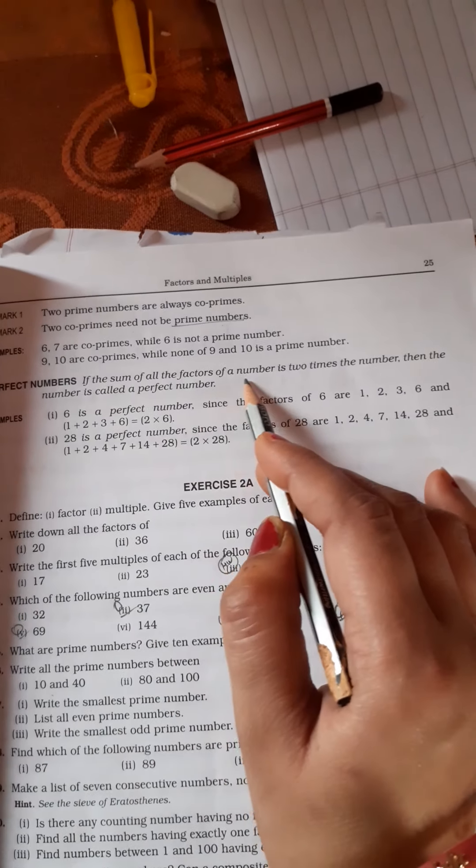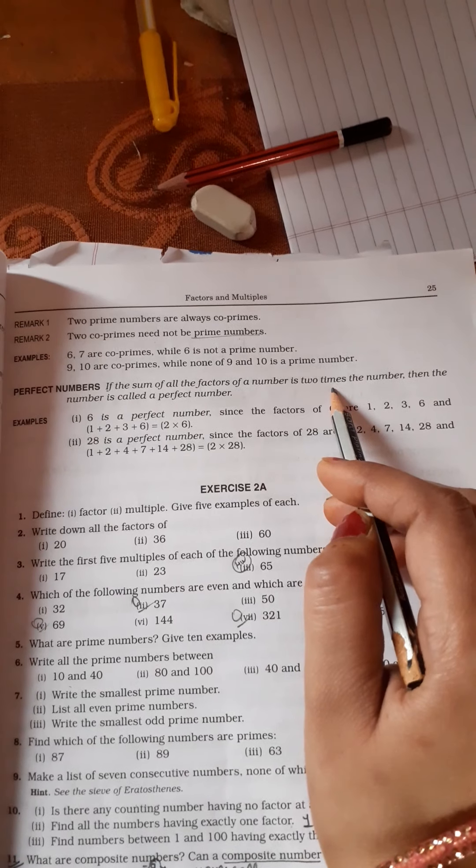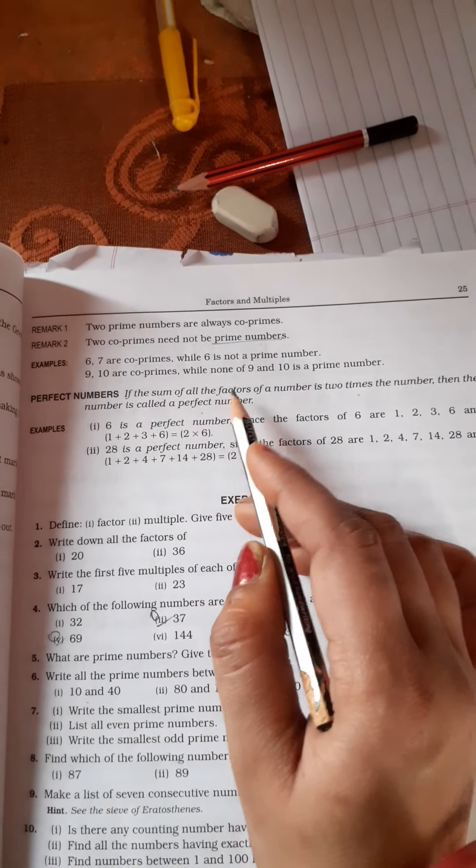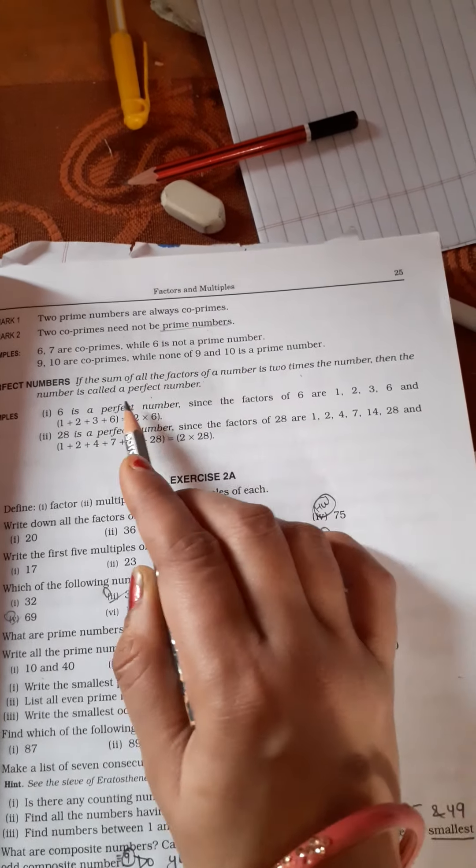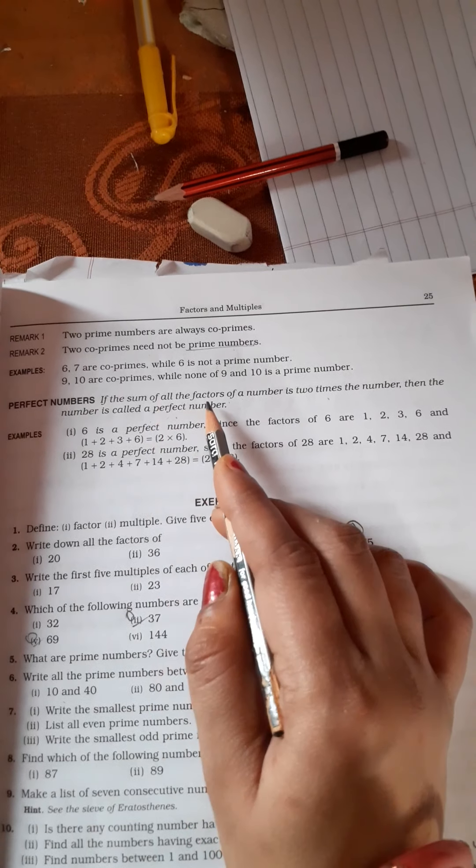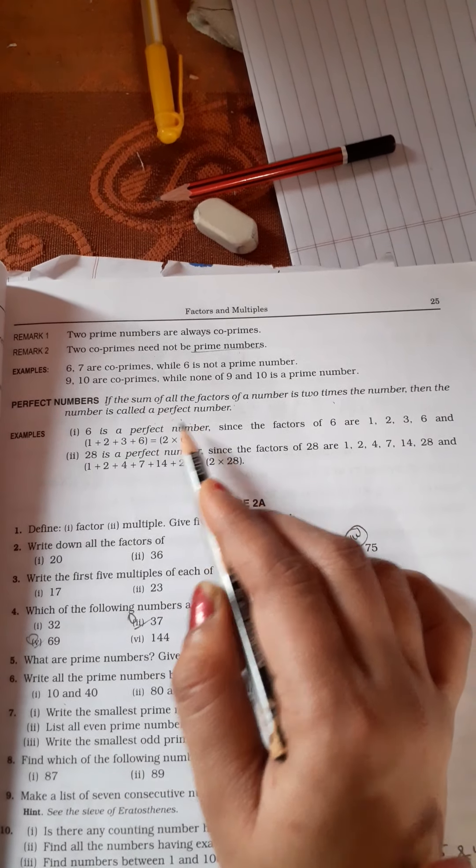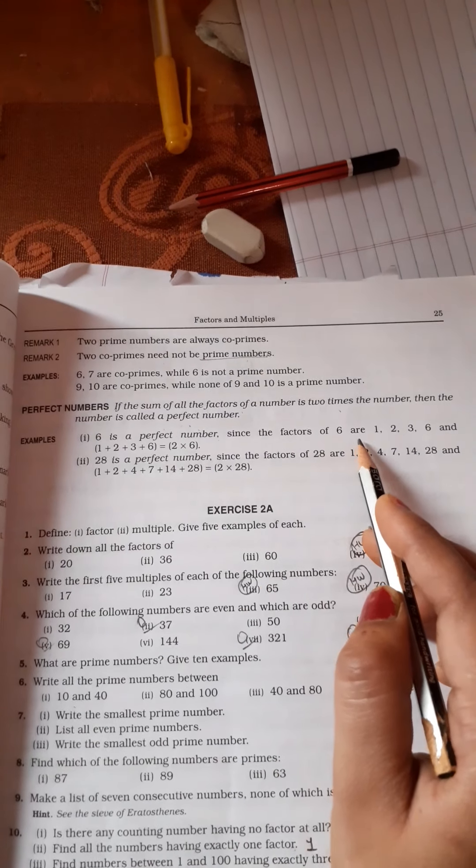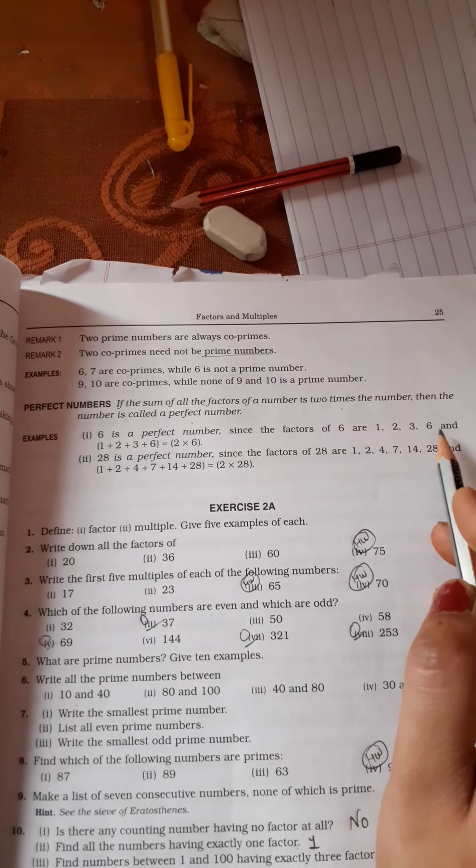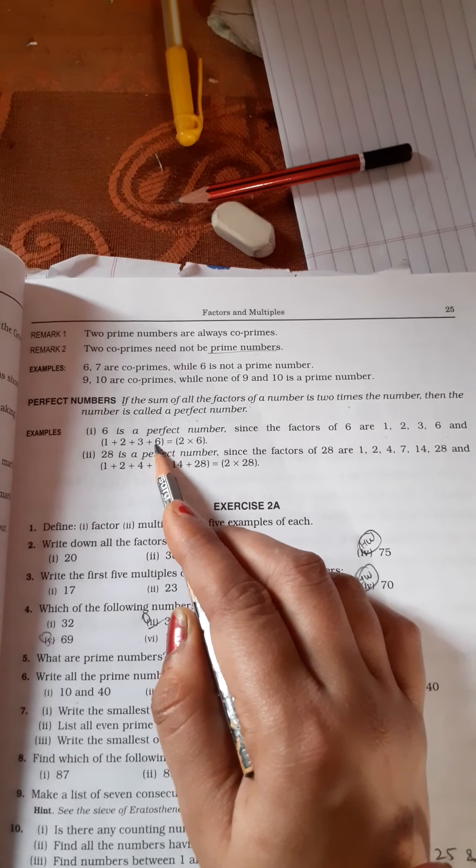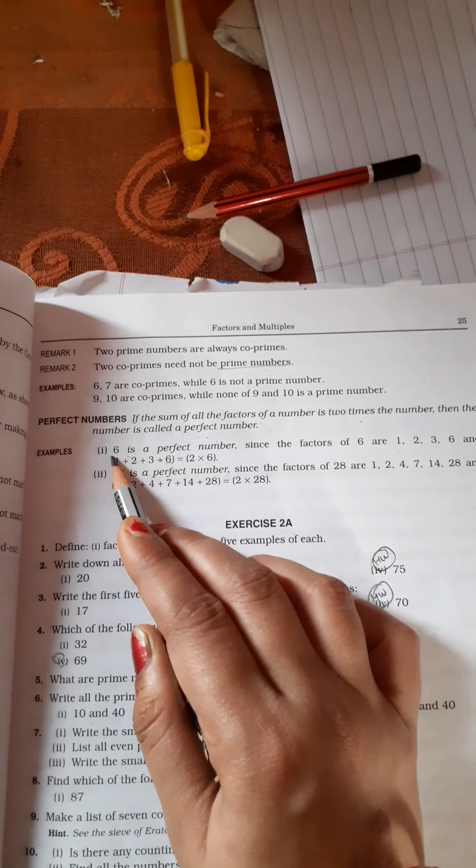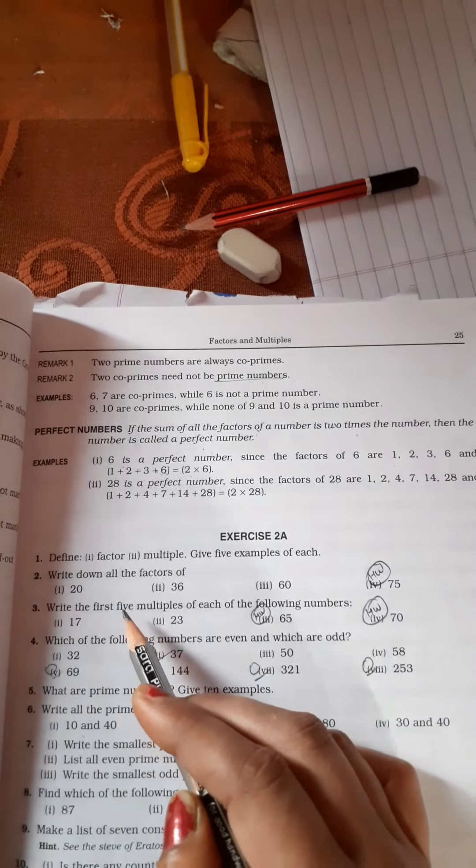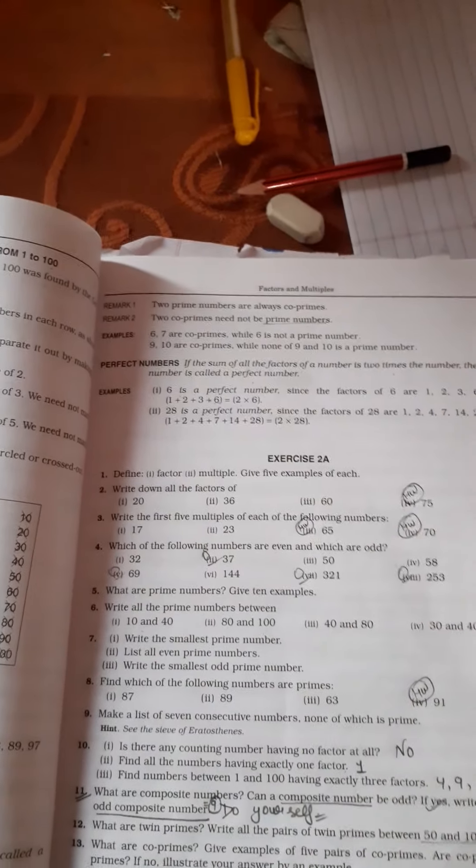Perfect number: if the sum of all the factors of a number is two times the number, the number is called a perfect number. If we have any number whose factors' sum is double that number, then it is a perfect number. For example, six is a perfect number. Since the factors of six are 1, 2, 3, and 6, if we add all these we get 12, and double of six is 12, so this is a perfect number. Right students, we will carry on in next class. Then we continue our exercise 2A. Till then, bye.